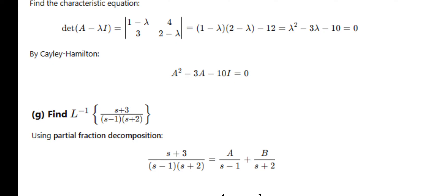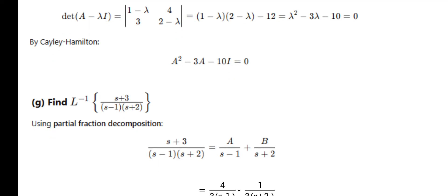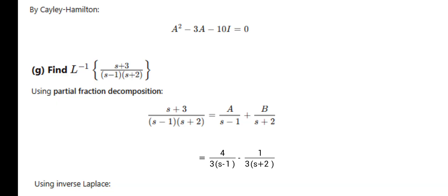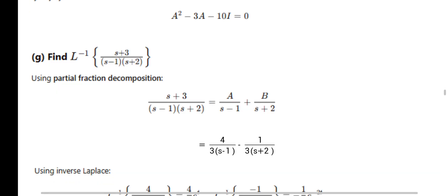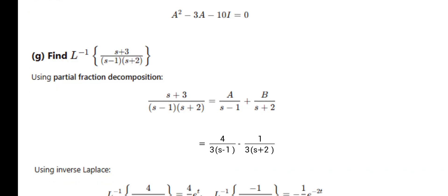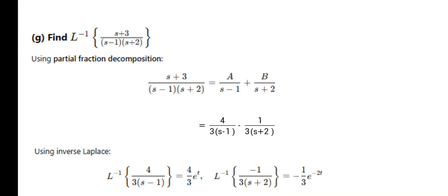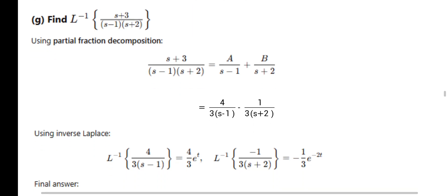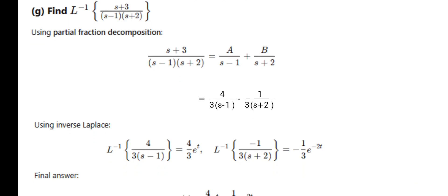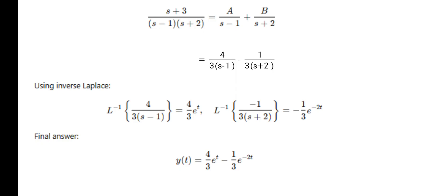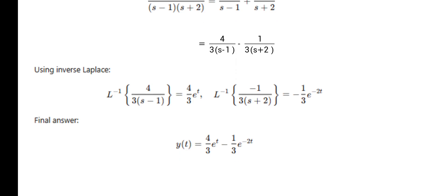Find L⁻¹{(s+3)/[(s-1)(s+2)]}. Use partial fractions: write as A/(s-1) + B/(s+2). For A, substitute s = 1; for B, substitute s = -2. Find A and B values, then take inverse Laplace transform. L⁻¹{1/(s-1)} = eᵗ and L⁻¹{1/(s+2)} = e^(-2t). Combine with the constants found.